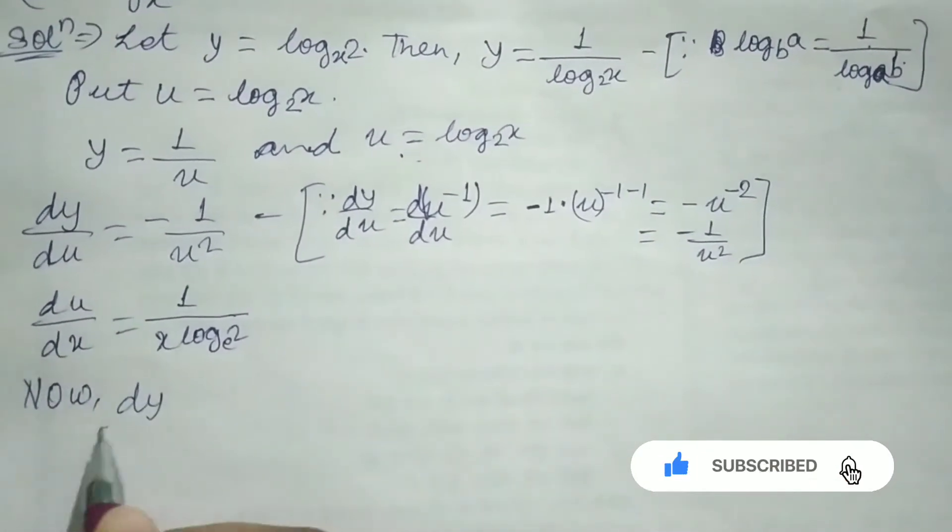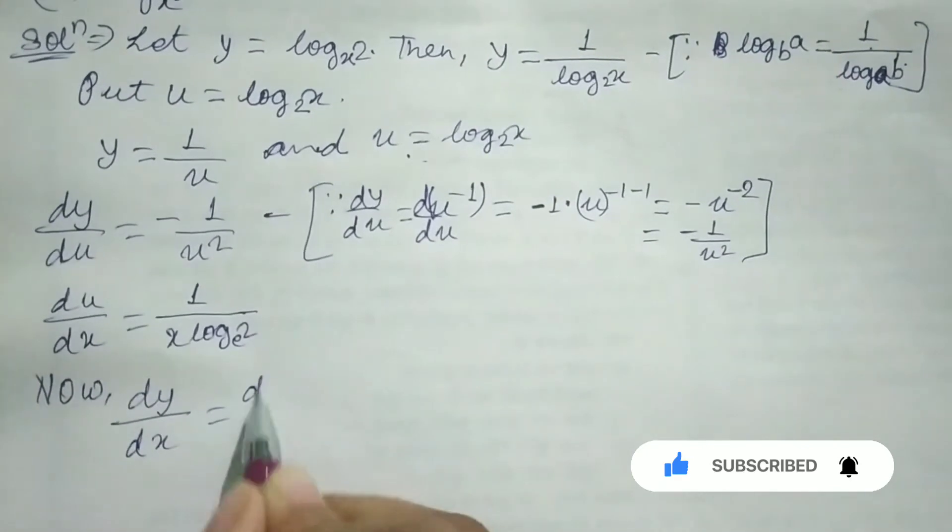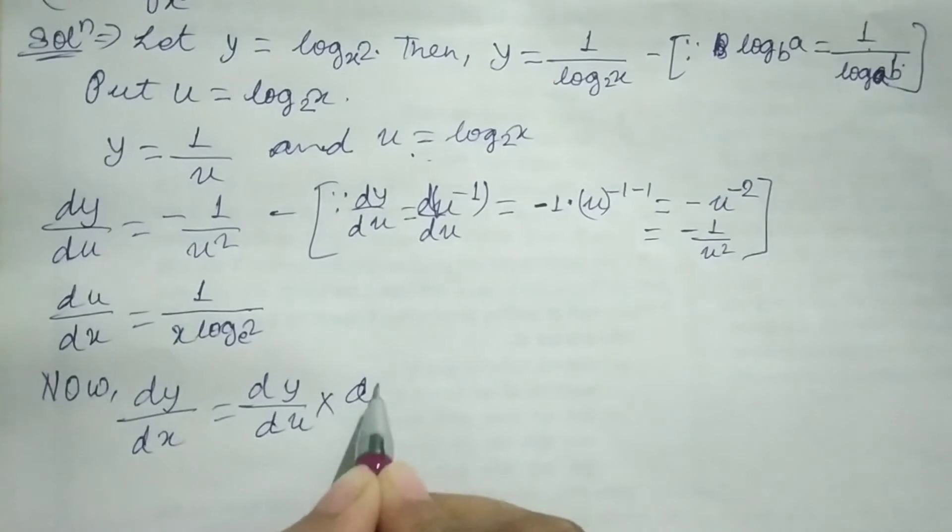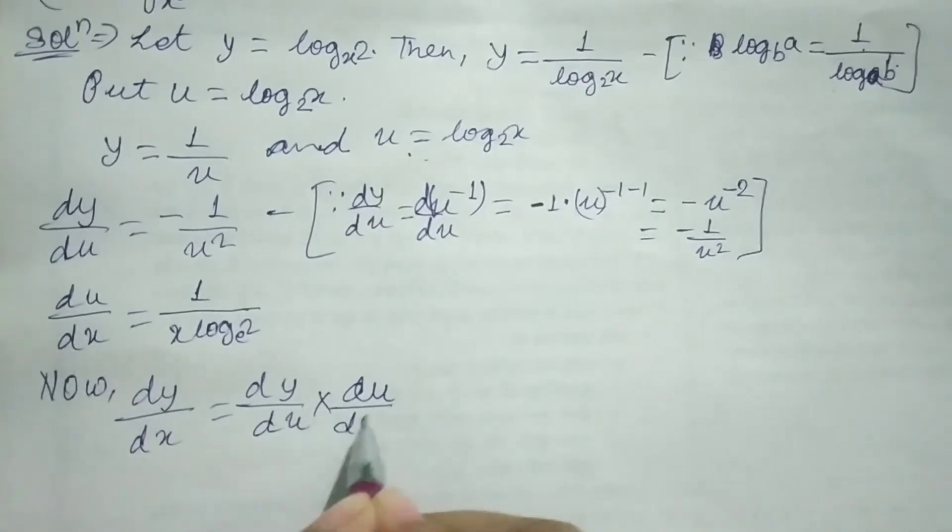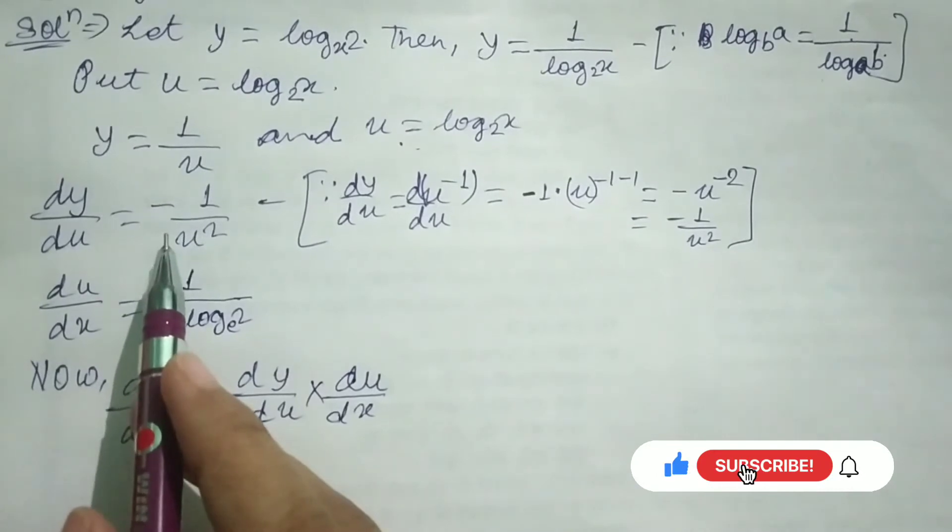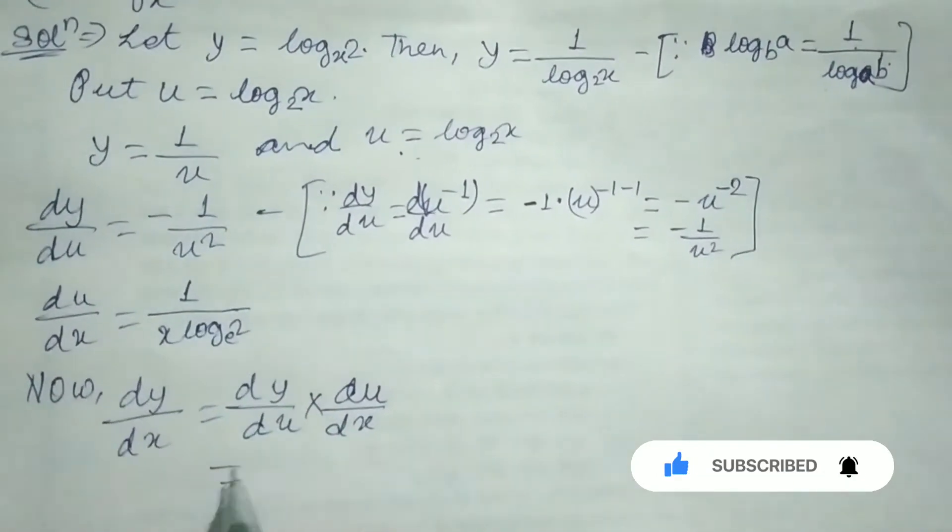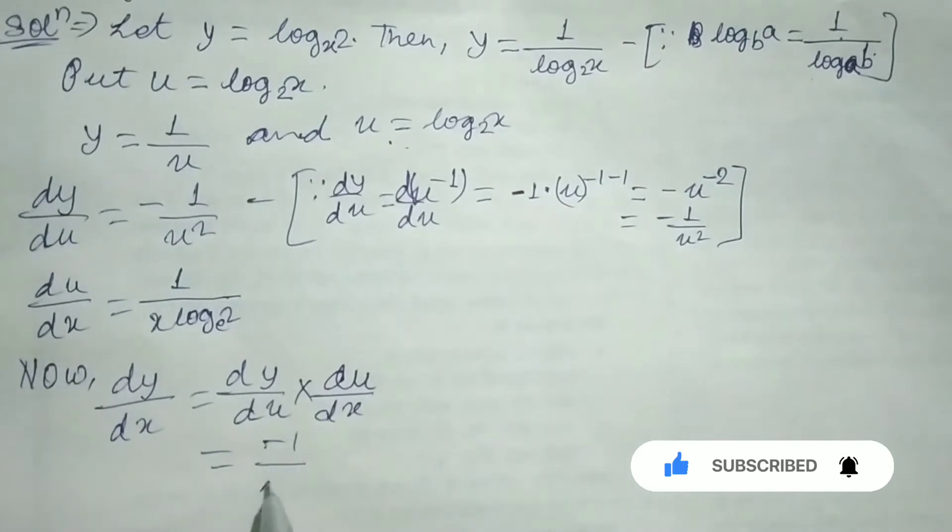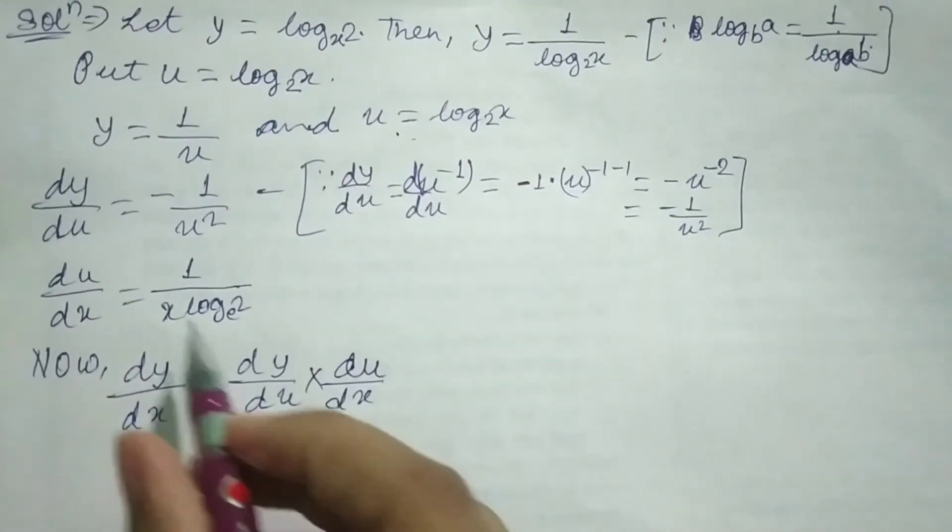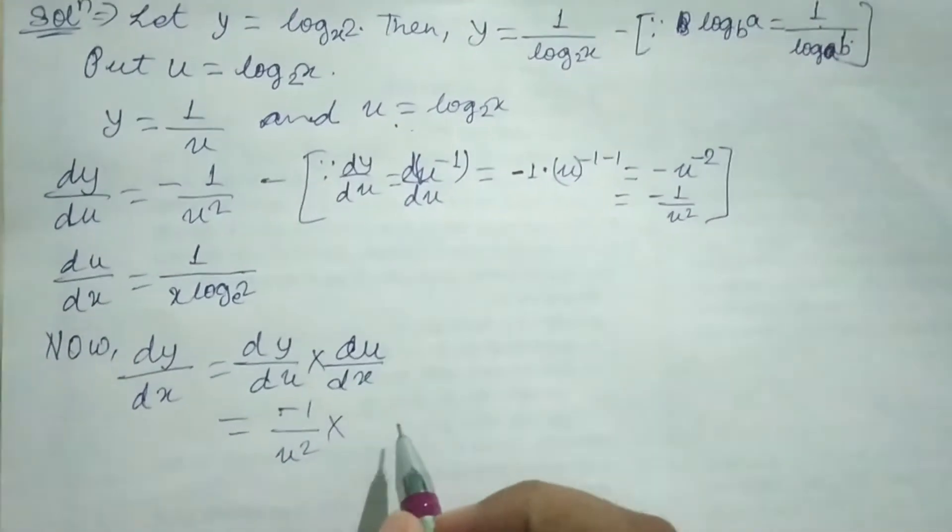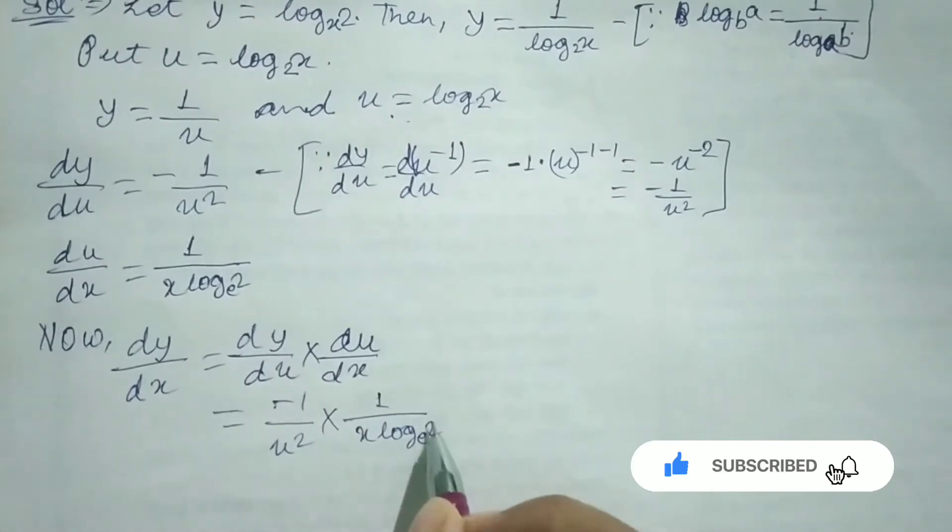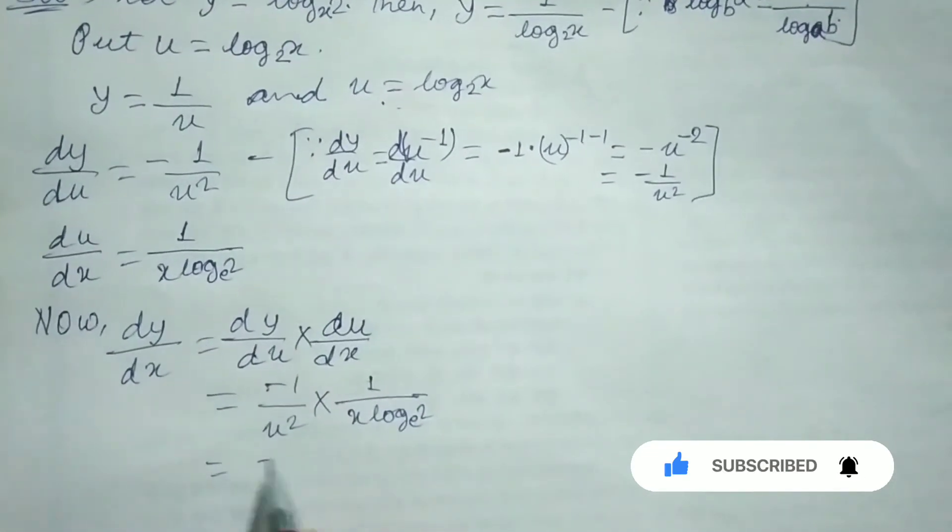Now dy/dx equals dy/du times du/dx. Differentiation of y with respect to u is minus 1 over u squared, times differentiation of u with respect to x, which is 1 over x log base e of 2, equals minus 1 over...